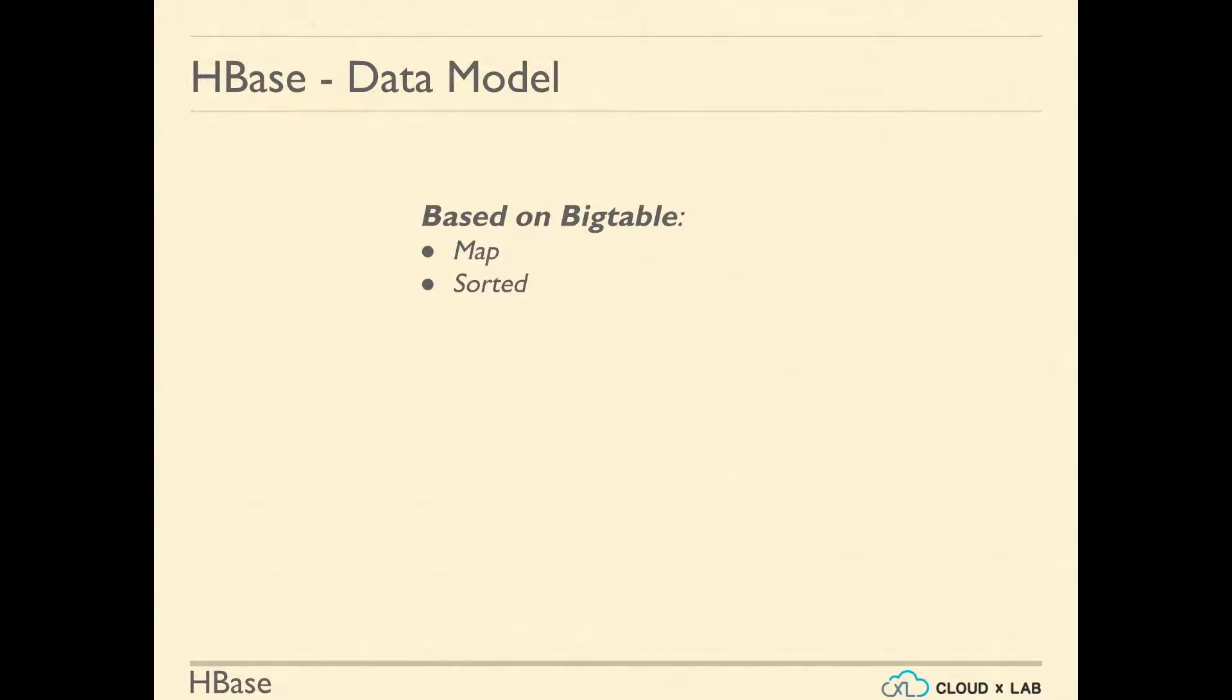This map is sorted by the key and is multi-dimensional. The value can have any number of dimensions. It is persistent. The data that is saved into HBase remains there even after reboot. This map is distributed onto multiple machines.